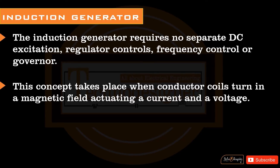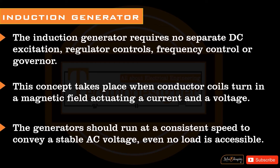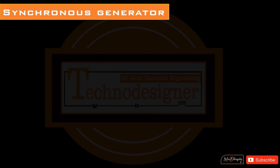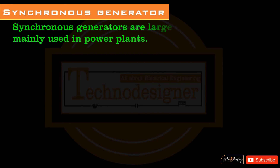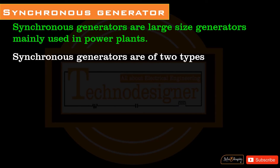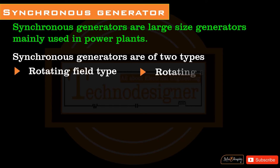Synchronous generators are large-size generators mainly used in power plants. Synchronous generators are of two types: rotating field type and rotating armature type.